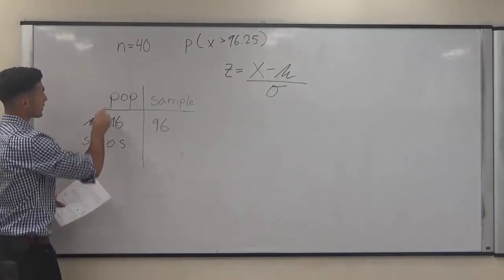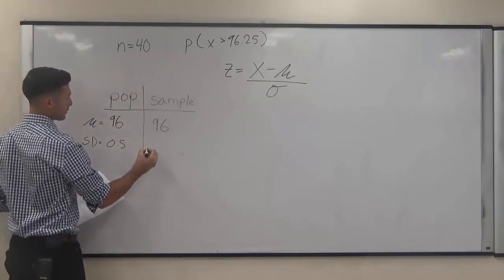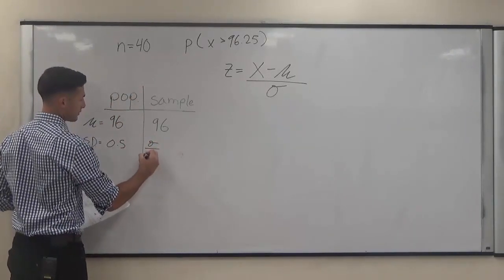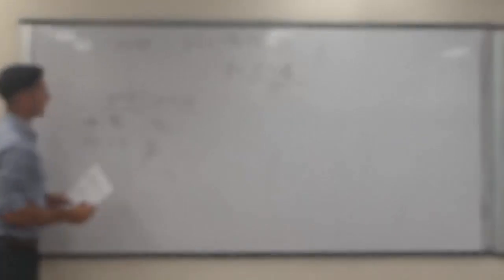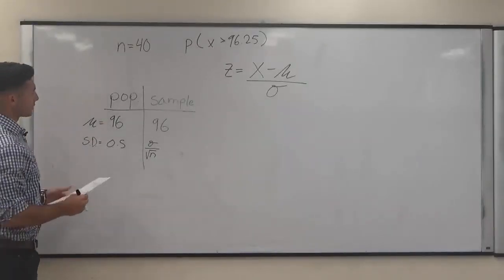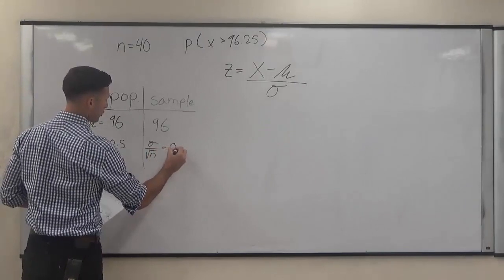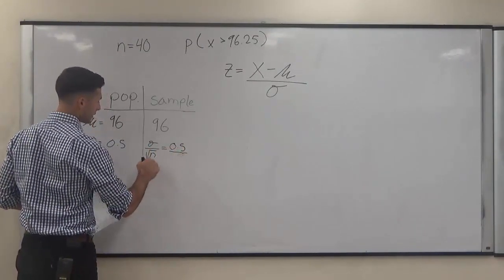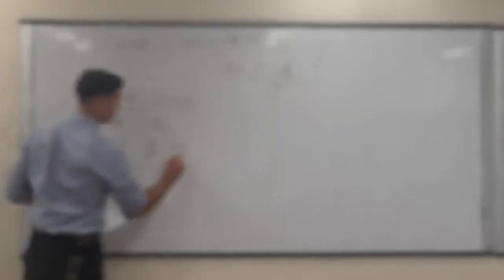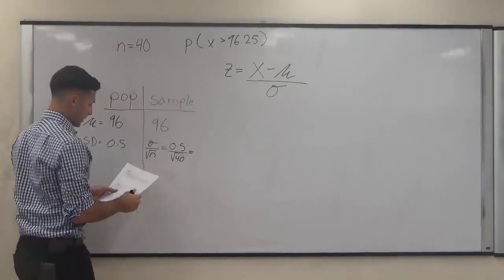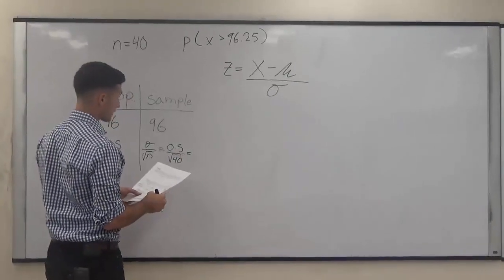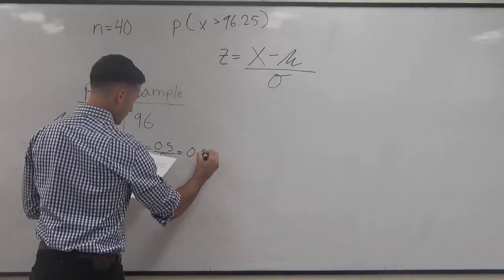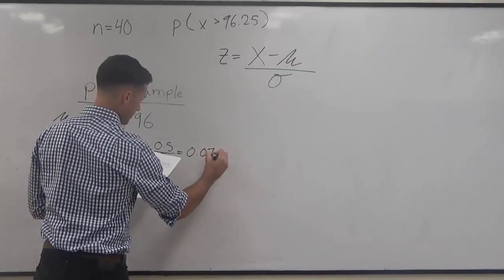However, the standard deviation, because our n is 40, the standard deviation is actually going to be the population standard deviation divided by radical n. So here n is 40, so we're going to have 0.5 population standard deviation divided by radical 40. So our sample standard deviation to plug in is going to be 0.079.